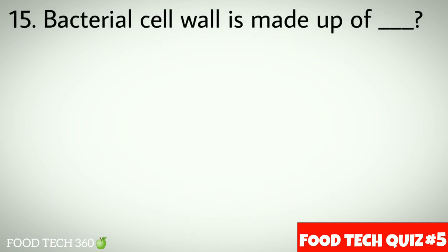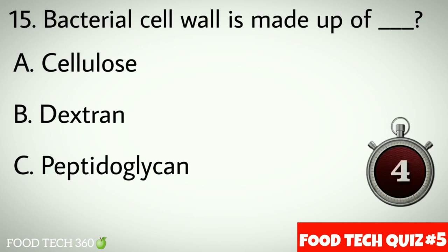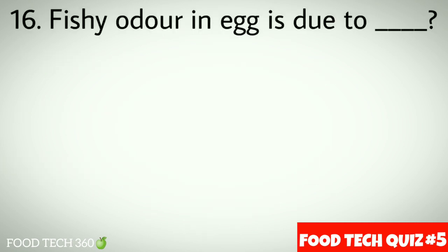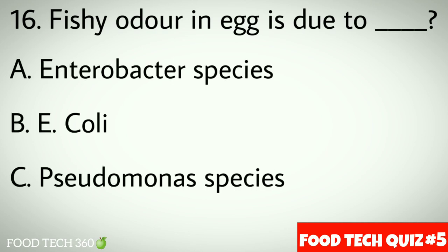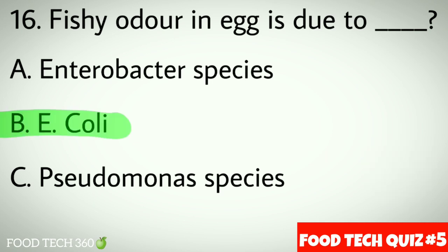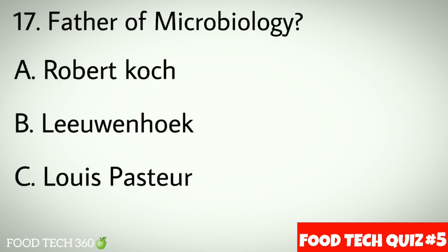Question number fifteen: bacterial cell wall is made up of dash. Options: a) cellulose, b) dextran, c) peptidoglycan. Correct answer: c) peptidoglycan. Question number sixteen: fishy odor in egg is due to dash. Options: a) Enterobacter species, b) E. coli, c) Pseudomonas species. Correct answer: b) E. coli.